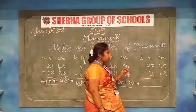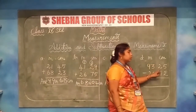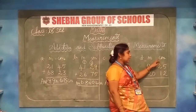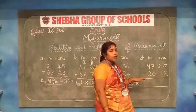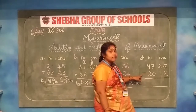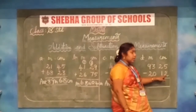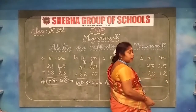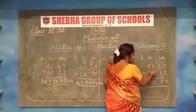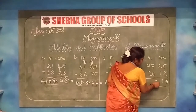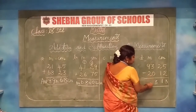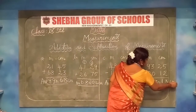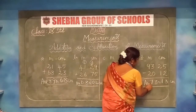Now the next sum: 93 meter 25 centimeter minus 20 meter 12 centimeter. 5 minus 2 is 3. 2 minus 1 is 1. 3 minus 0 is 3. 9 minus 2 is 7. The answer is 73 meter 13 centimeter.